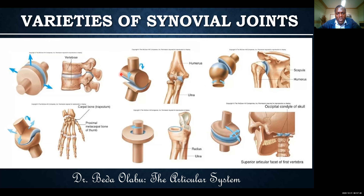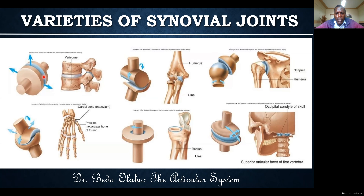There are other varieties of synovial joints. You can have what we call synovial planar — planar from the word plane. Synovial planar joints are called so because the articulating surfaces are flat. A good example of a synovial planar joint is the proximal tibiofibular joint, where the articulating surfaces are flat.